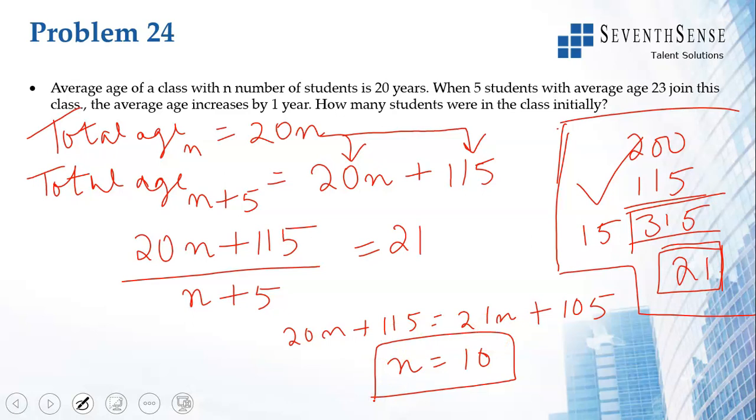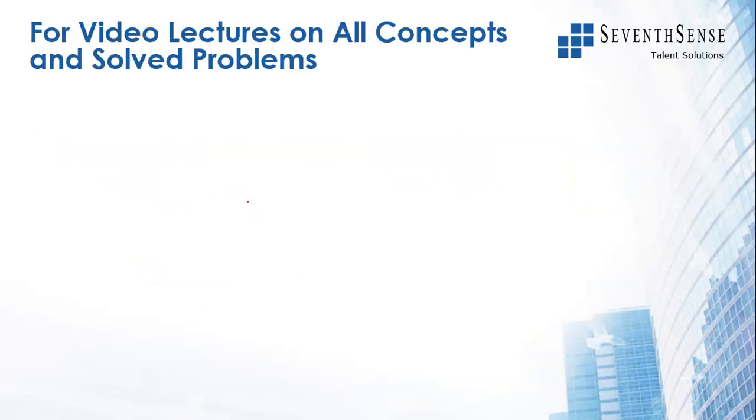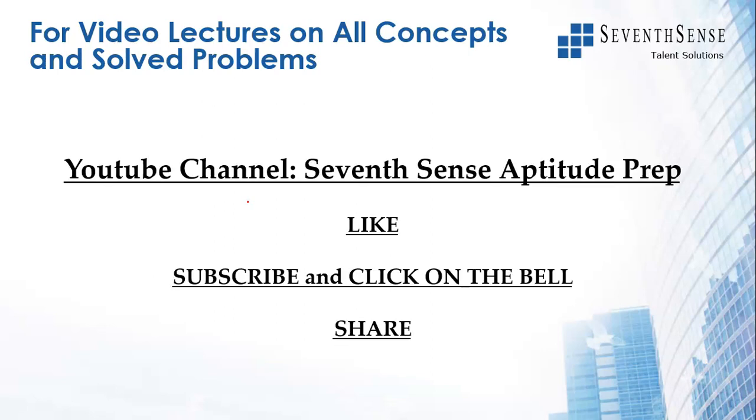Friends, we have looked at the concept on averages called including and excluding. You add a new person, the average changes. You remove an existing person, the average changes, and how to calculate the age of the person joined or the age of the person left. If you like the video, please click the thumbs up sign. Show us your love in the comments. If you have any doubts, you could write that in the comments and we would solve it there or create a new video for it. If you haven't subscribed, click on the subscribe button.